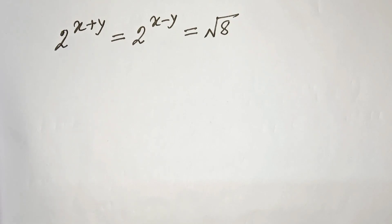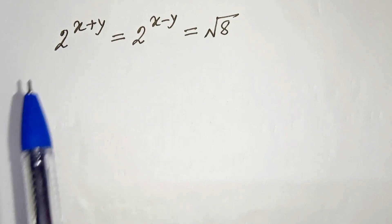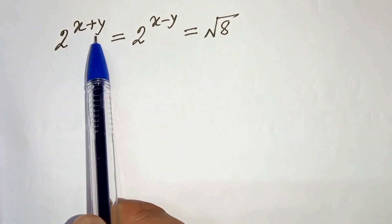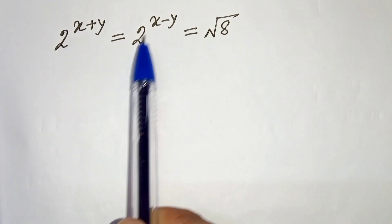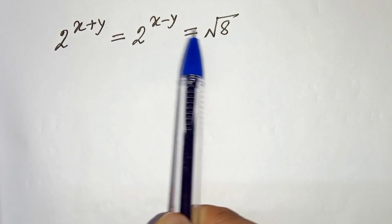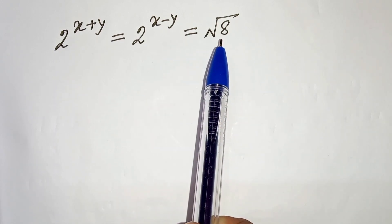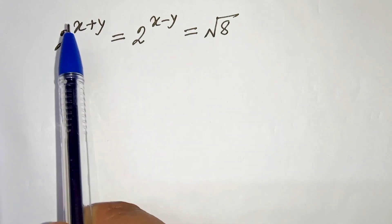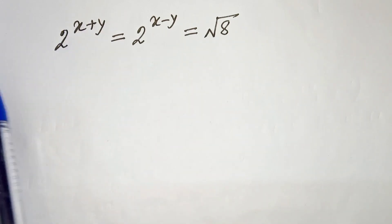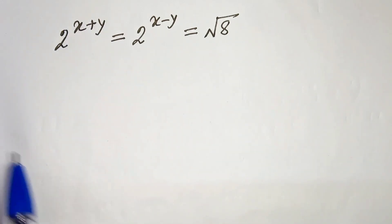Hello everyone. In this video we have 2 to the power x plus y equals to 2 to the power x minus y equals to root 8. We have to find the value of x and y. So let's start.